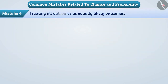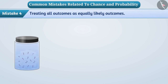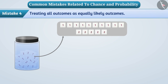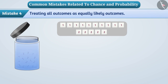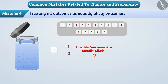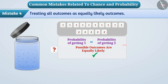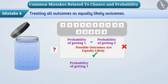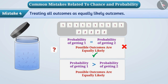Mistake 4: Treating all outcomes as equally likely. If we tell children that there are 15 slips in a box in which number 1 is written on 10 slips and number 2 is written on 5 slips, and one slip is drawn at random — whether the possible outcomes are equally likely? Children think that the number written on the slips is either 1 or 2, hence the outcome will be one of these numbers, so they think the probability of getting each number is equal, i.e. the result is equally likely. But this is a misunderstanding. Here, number 1 is written on 10 slips and number 2 is written on 5 slips, so the probability of getting 1 is greater than the probability of getting 2. Therefore, the possible results in this situation may not be equally likely.